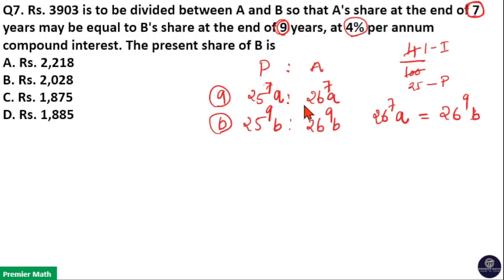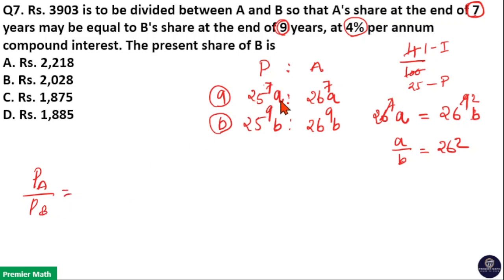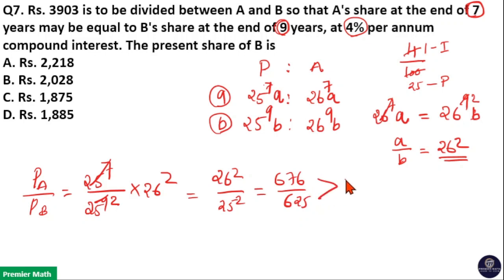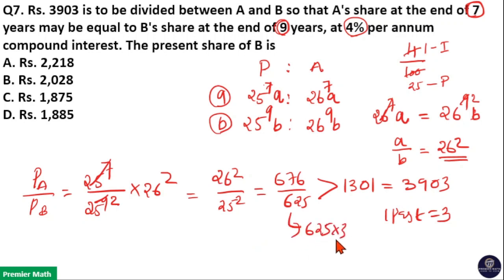Since we equalize the amounts in ratio format, A/B = 26^2. Then taking the ratio of principles: Principle of A / Principle of B = (25^7 × A) / (25^9 × B). Substituting A/B = 26^2, this becomes 26^2 / 25^2 = 676/625. Since total is 3,903, 1 part = 3, so 625 parts = 625 × 3 = 1875.